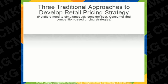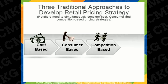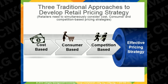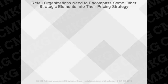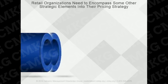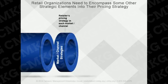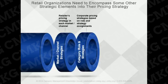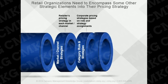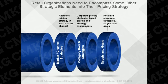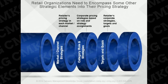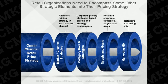Companies have historically used one of three approaches to develop their pricing strategy: cost-based, consumer-based, or competition-based. In order to develop an effective pricing strategy, companies need to take into account and analyze simultaneously the consumer, cost, and competition. Companies also need to encompass other elements, including the retailer's pricing strategy in each market channel, pricing strategies tied to different category role and strategy assignments, the retailer's strategic objectives, targets and goals including price thresholds and guardrails, and their marketing mix. Consideration for each of these elements will lead to a robust omni-channel retailing pricing strategy.